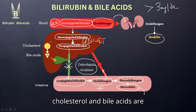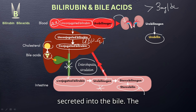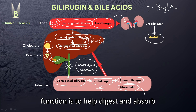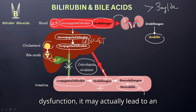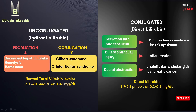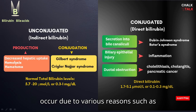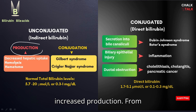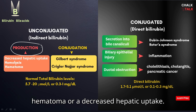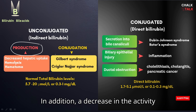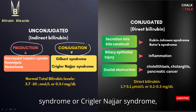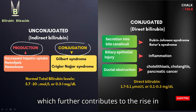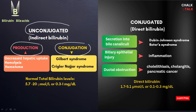Cholesterol and bile acids are synthesized from cholesterol. Once synthesized, they are secreted into the bile, and their function is to help digest and absorb lipids. They usually recirculate from the intestines into the liver. In hepatic dysfunction, this may lead to elevated bile acids. Elevated levels of indirect bilirubin can occur due to reasons such as increased production from hemolysis, hematoma, or decreased hepatic uptake. A decrease in the activity of conjugation enzymes could also lead to conditions like Gilbert syndrome or Crigler-Najjar syndrome, which further contributes to the rise in indirect or unconjugated bilirubin.